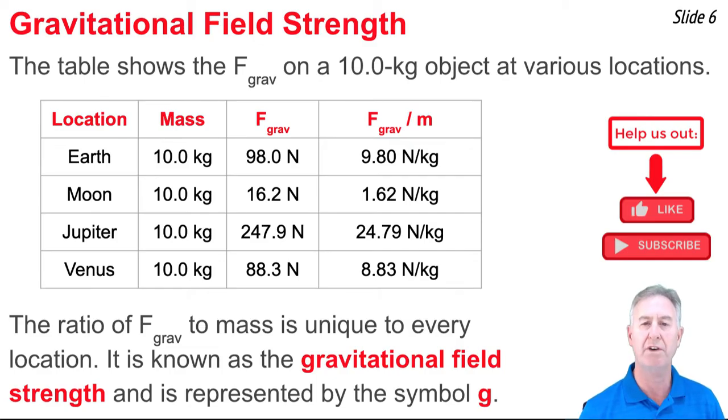This ratio is unique for every planet and is independent of the actual object. We refer to it as the gravitational field strength, and in physics we give it its own symbol. It's called g.